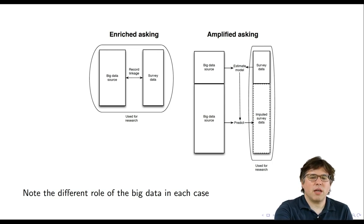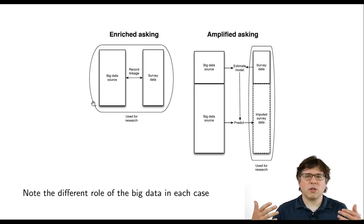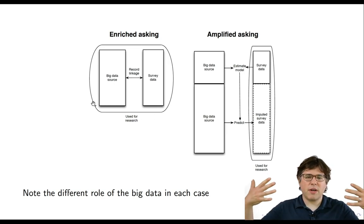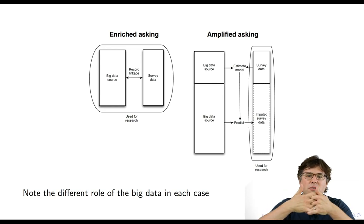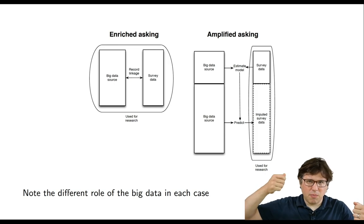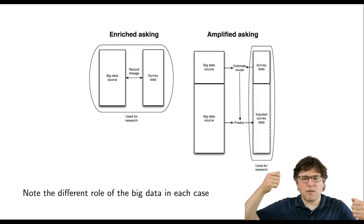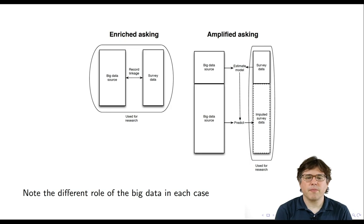In enriched asking, you have a big data source, you have a survey, and you link them together. This step of record linkage is very important — making sure that the people in the survey and the people in the big data line up so you can connect their records.